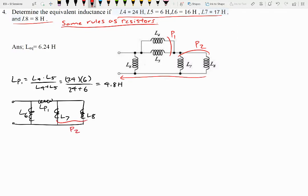So here, this would be parallel two. So L parallel two would be L7 times L8 over L7 plus L8. So L7 is 17, L8 is 8, and 17 plus 8. So this would give us 5.44 henrys.